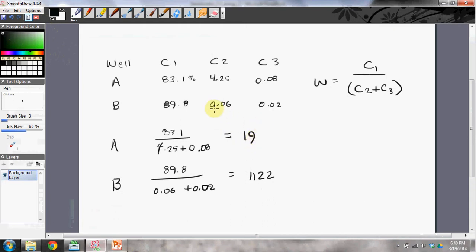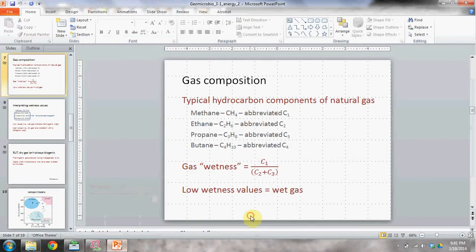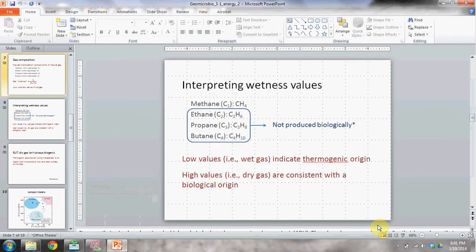For well B, 89.8 divided by 0.06 plus 0.02. And the value that we get there is 1,122. So because this gas from well A has a higher abundance of ethane, it would be considered a wet gas, wet gas with a low wetness value. Well B has a low abundance of both ethane and propane, so you end up with a relatively high wetness number, and that's actually a dry gas. So those numbers are a little bit weird in that dry gas has a high wetness value, but that's how it works.